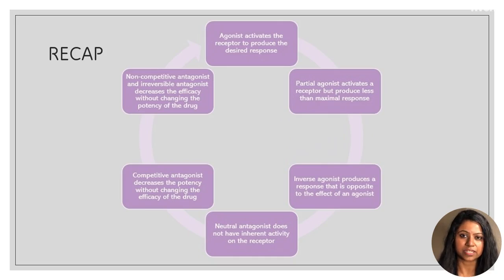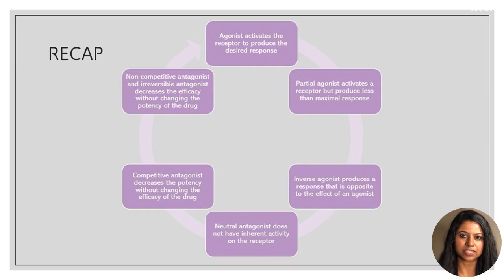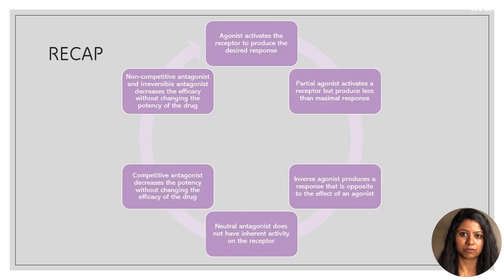An antagonist does not have any inherent activity on the receptor — it just prevents binding of the agonist. A competitive antagonist decreases the potency of a drug without changing its efficacy. A non-competitive antagonist and irreversible antagonist decrease the efficacy of a drug without changing its potency.